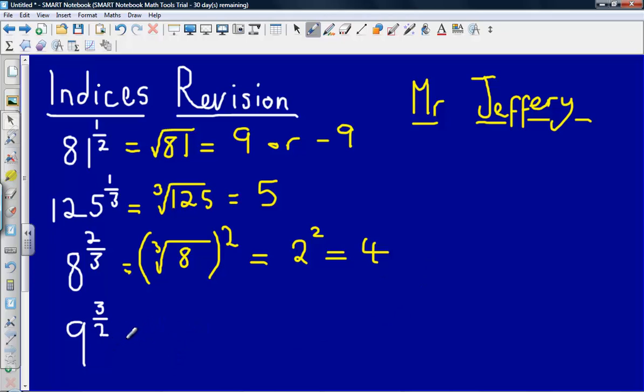Lastly, 9 to the three halves. So first of all, we would start by saying that's the square root of 9 raised to the power of 3. And the square root of 9 gives us 3, and we are cubing that. So 3 cubed gives us an answer of 27. 3 times 3 times 3 gives us an answer of 27.